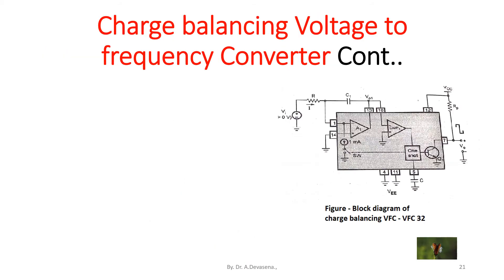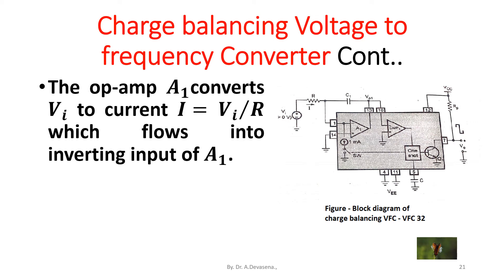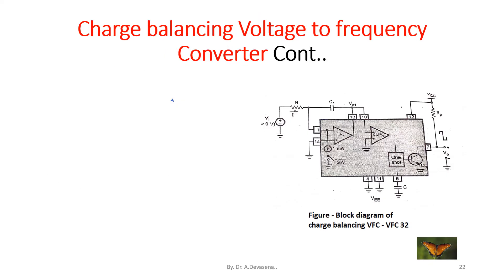The op-amp A1 converts V_I to the current I equals V_I by R which flows into the inverting input of A1. The value of R is such that I is less than 1 milliamp.